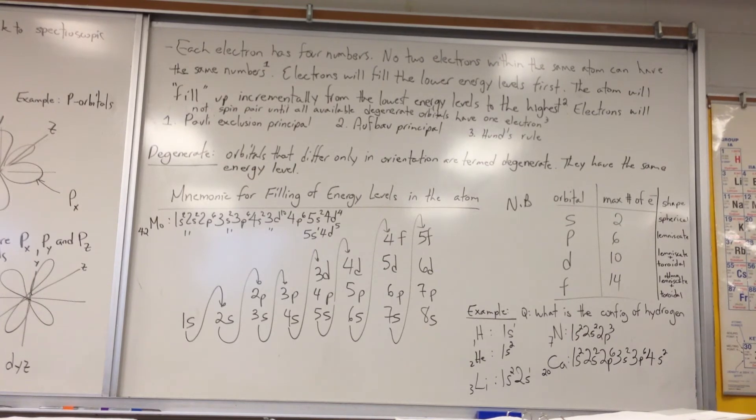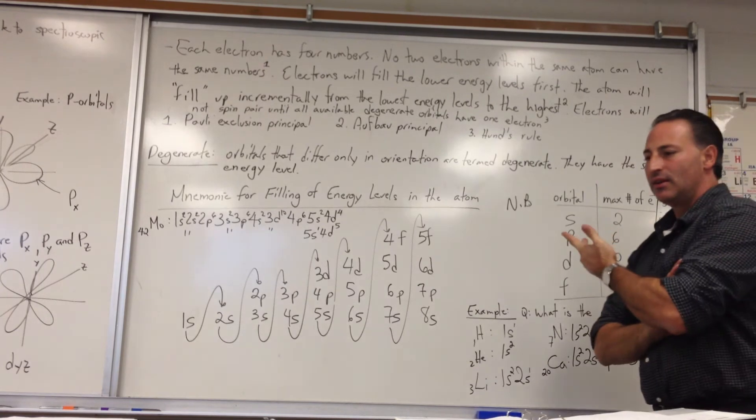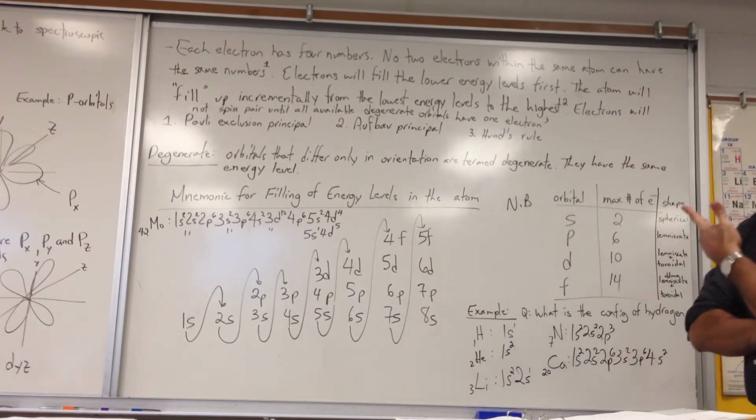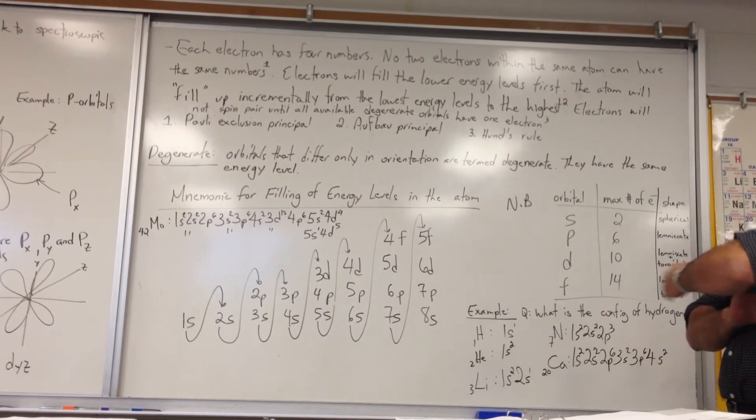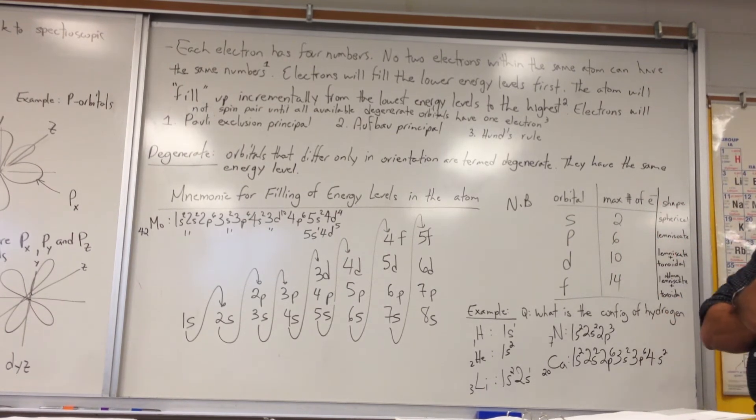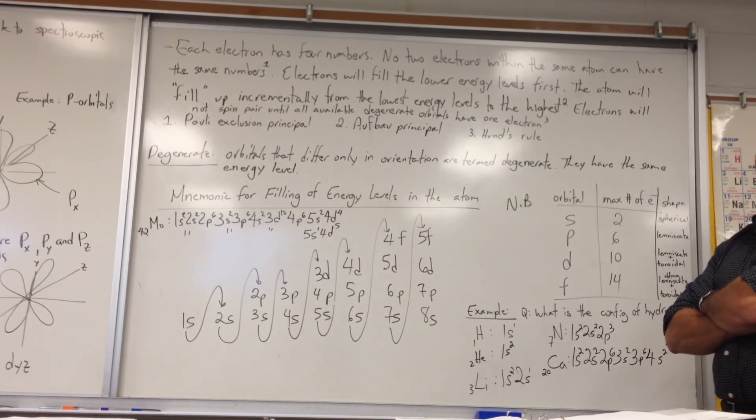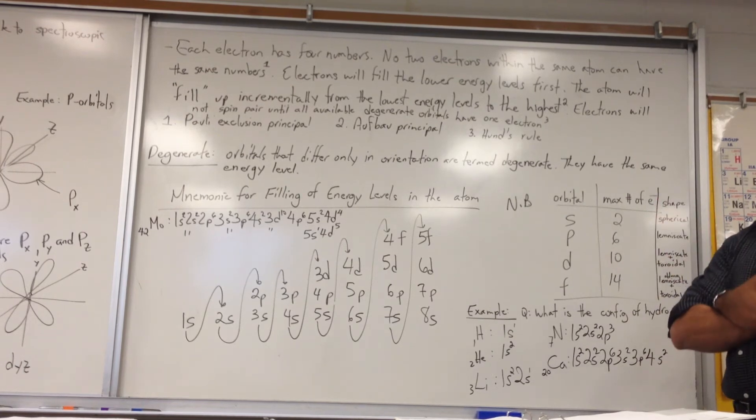The word degenerate was used. Degenerate orbitals that differ only in orientation are termed degenerate. They have the same energy level. The Px, Y, and Z orbitals, they have the same energy levels. They only have a difference in orientation in space. The only way you can give them different energies is by putting the atom in a magnetic field.